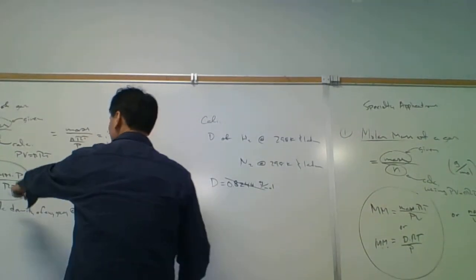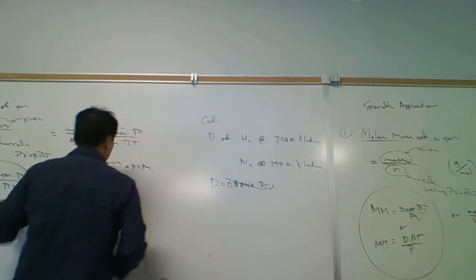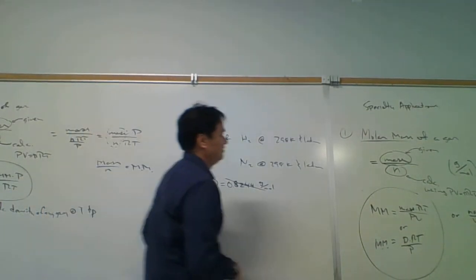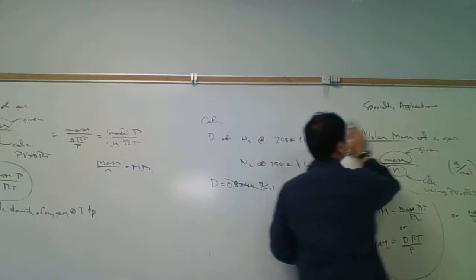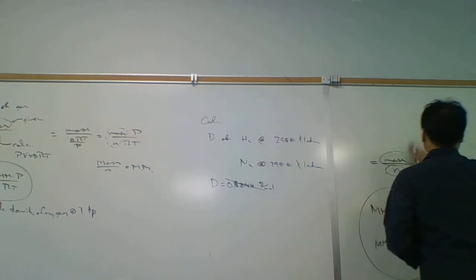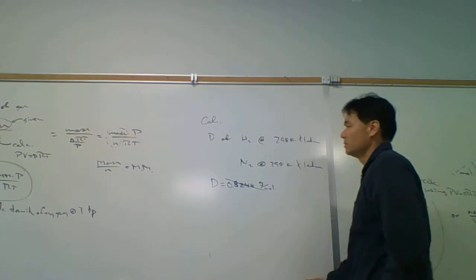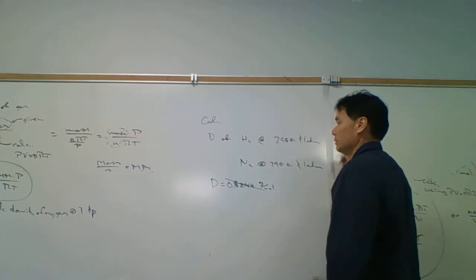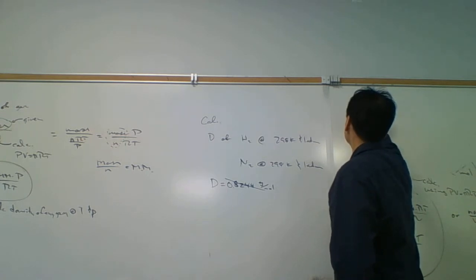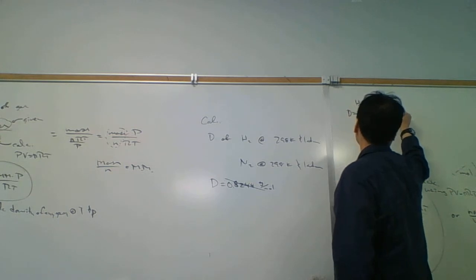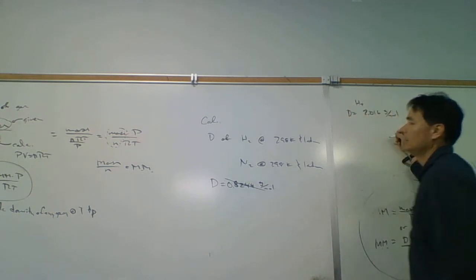Okay, let's plug in. What is the molar mass of hydrogen? 2.016. So density, this is going to be for hydrogen, 2.016 grams per mole. Plug that in.